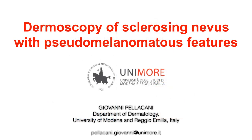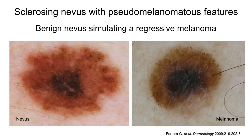Dermoscopy of sclerosing nevus with pseudomelanomatous features. Sclerosing nevus with pseudomelanomatous features is a benign nevus that simulates a regressive melanoma.